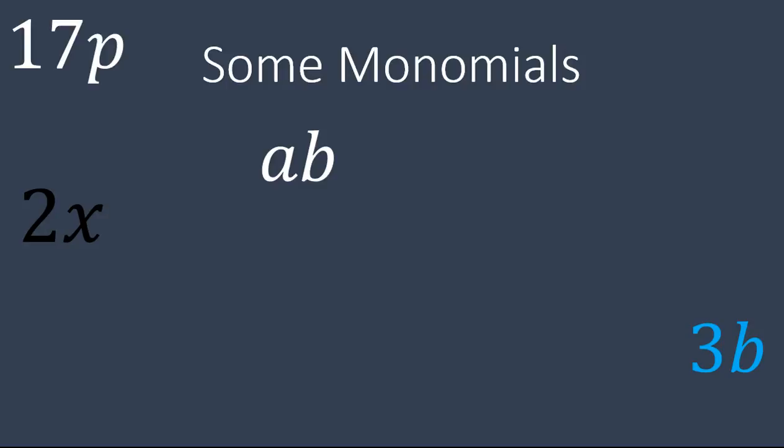17p, very similar example. We can have negative numbers like negative 12mn. Mn is two variables together with a negative number. Still a monomial. We have the letter y all by itself. That's a monomial. The number 4 completely by itself, that's a monomial as well. It's a one term that's either a number, a letter, or a combination of them. 4 fifths, this is a fraction. Fraction is a number. So a number like that, 4 fifths, is still considered a monomial.